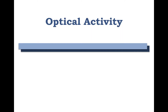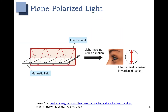In this video, we're going to talk about optical activity. Optical activity involves the concept of plane polarized light. Light has both a component electric field and a component magnetic field, and normally it's oscillating in all different directions.